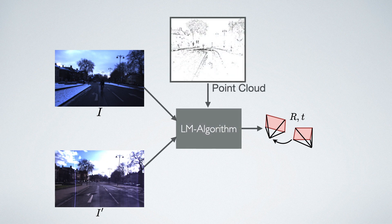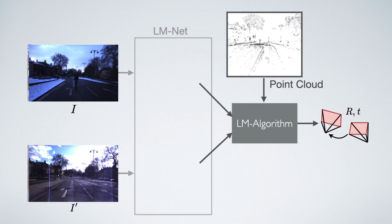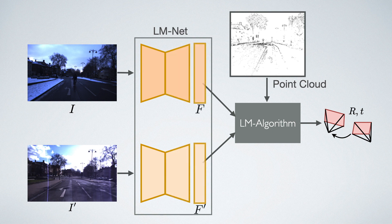Direct image alignment estimates the 6 degree of freedom pose between two images using the classical Levenberg-Marquardt algorithm. We replace the images with deep features generated by our network LMNet.